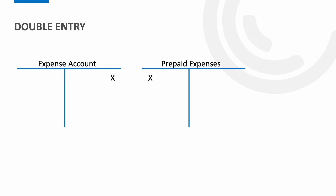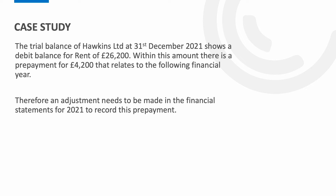Now let's put this into an example scenario. Here we have our first case study. The trial balance of Hawkins Limited at the 31st of December 2021 shows a debit balance for rent of £26,200. Within this amount there is a prepayment of £4,200 that relates to the following financial year. Therefore an adjustment needs to be made in the financial statements of 2021 to record this prepayment.